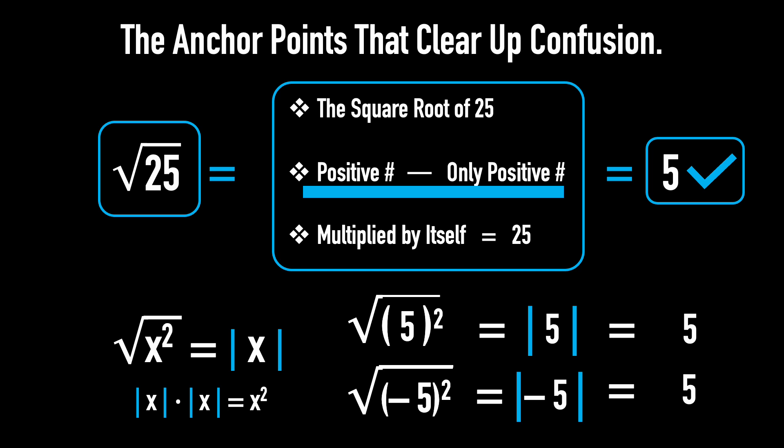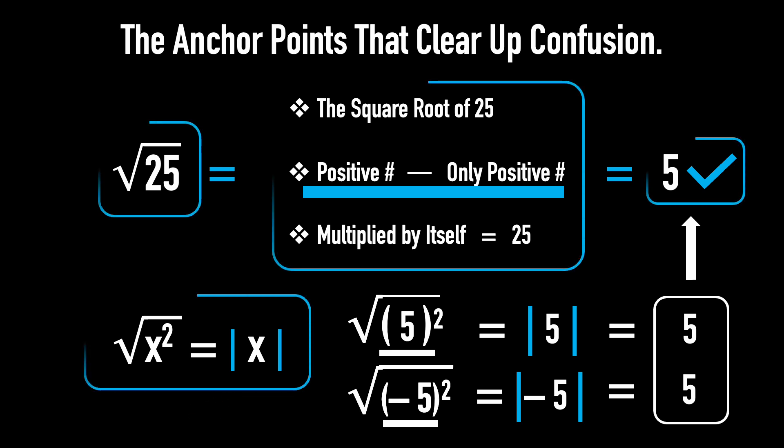In summary, whether x is 5 or negative 5, the square root of x squared is always 5, only one value, always positive, just as we discussed at the beginning. Again, I strongly encourage you to anchor this in your mind. It will help you avoid misconceptions and serious mistakes. Let's see how that matters in the next part.